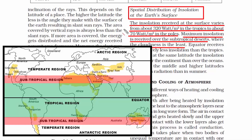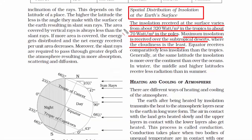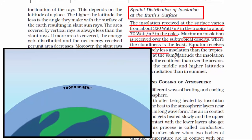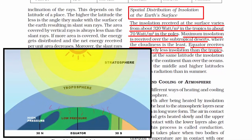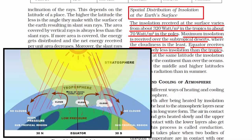Maximum insolation is received over the subtropical deserts. In the subtropical region we have deserts like Mojave, Sonoran, Chihuahua, Thar, Sahara, and Great Victoria desert. There are no clouds there, so the amount of insolation received is far more than in the tropical region. The tropical region is warm, which creates moisture that converts into clouds and causes rain. If there are clouds, they reflect back a good amount of incoming sunlight. Subtropical deserts do not have many clouds, so they receive the maximum amount of incoming solar energy.